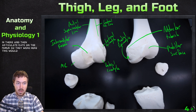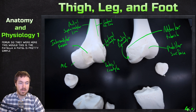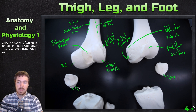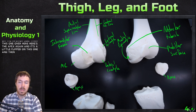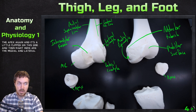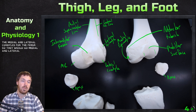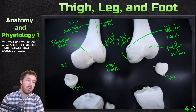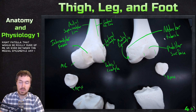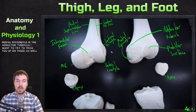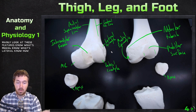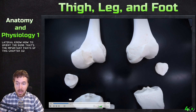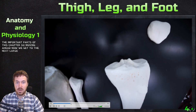The patella is the kneecap. It has an apex on the inferior side. The medial and lateral condyles of the femur articulate right into that patellar surface. I wouldn't try to trick you on left versus right patella, or between the medial epicondyle and the adductor tubercle. The main focus: know what's medial, know what's lateral, and know how to orient the bone.